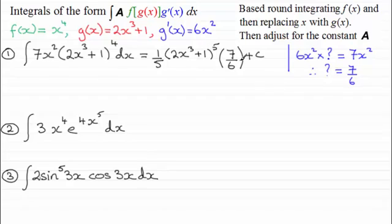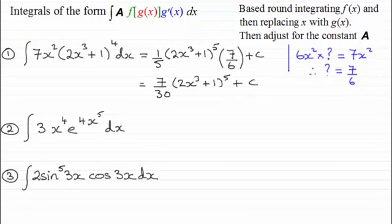So all that we need to do now is just tidy this up. 1 fifth times 7 sixths is just going to give us 7 over 30. 7 thirtieths then, of all of 2x cubed plus 1 raised to the power of 5 plus the constant of integration c. Okay, well let's just try the second example.